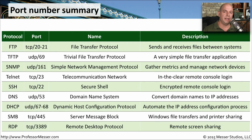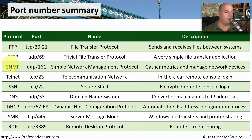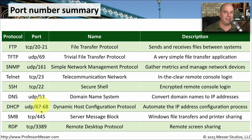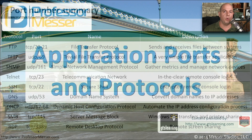Here's a summary of all the port numbers from this video. File transfer protocols: FTP uses TCP ports 20 and 21, and TFTP uses UDP port 69. SNMP for network management uses UDP port 161. Telnet for non-encrypted command-line communication uses TCP port 23, but we'll generally always use SSH, which is encrypted, over TCP port 22. DNS and name services run over UDP port 53. DHCP for automatic IP addressing uses UDP ports 67 and 68. To transfer files in Windows, SMB uses TCP port 445. And for remote desktop communication, RDP uses TCP port 3389.